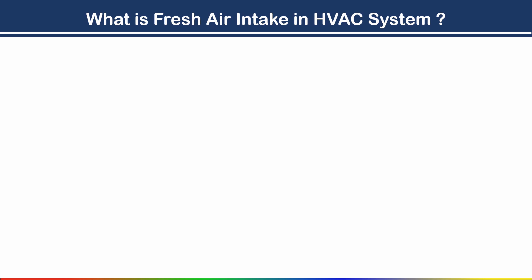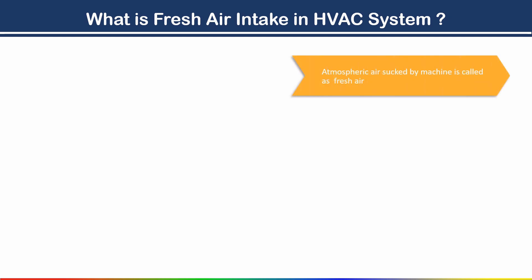What is fresh air intake in an HVAC system? In simple language, atmospheric air sucked by the machine is called fresh air. As part of your HVAC system, a fresh air intake is an opening that lets outside air into your house. Its main functions are to improve your home's indoor air quality and help your furnace work effectively.